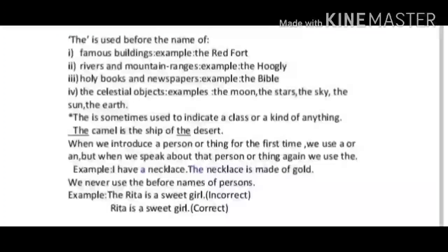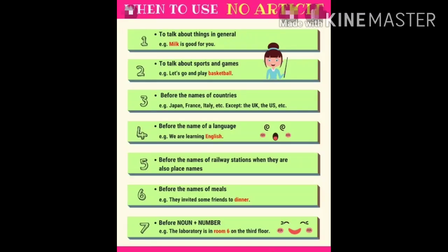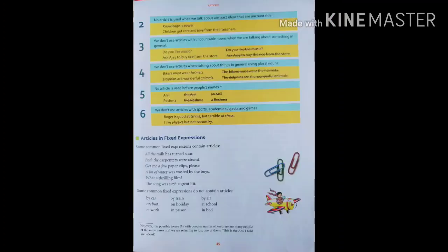First point: to talk about things in general. Example: milk is good for you. Second point: to talk about sports and games. Example: let's go and play basketball. Third point: before the names of countries. Example: Japan, France, Italy — except the UK, the US, etc. Fourth point: before the name of a language. Example: we are learning English. Fifth point: before the names of railway stations when they are also place names. Sixth point: before the names of meals. Example: they invited some friends to dinner. Seventh point: before noun plus number. Example: the laboratory is in room 6 on the third floor.